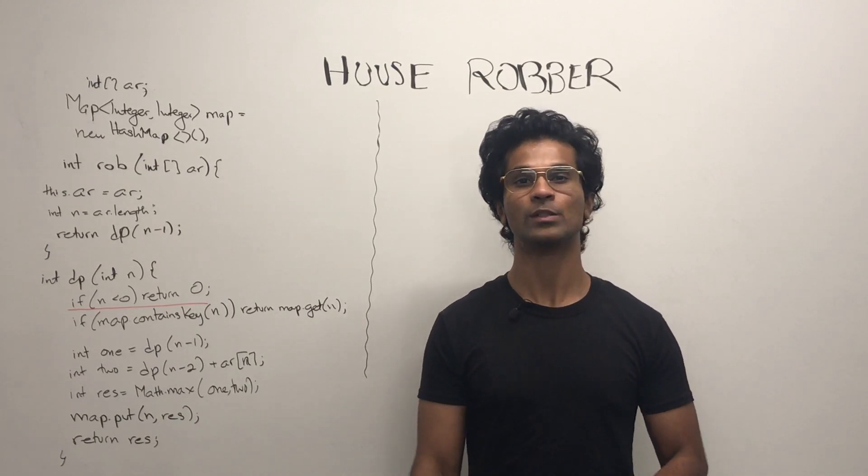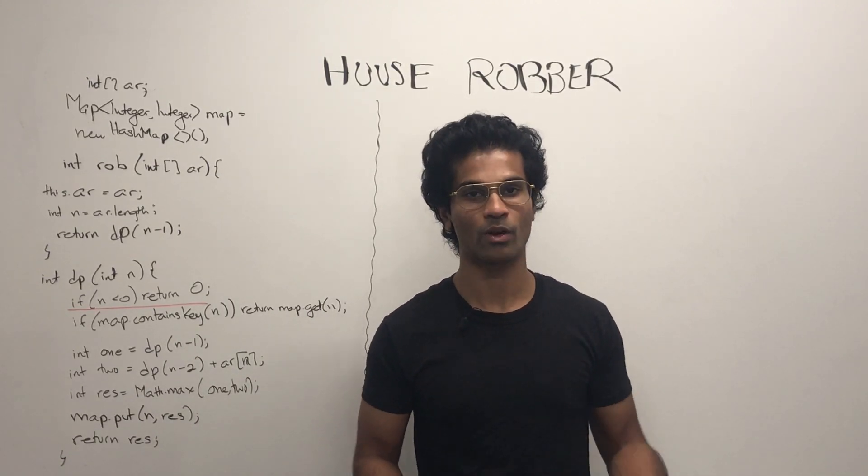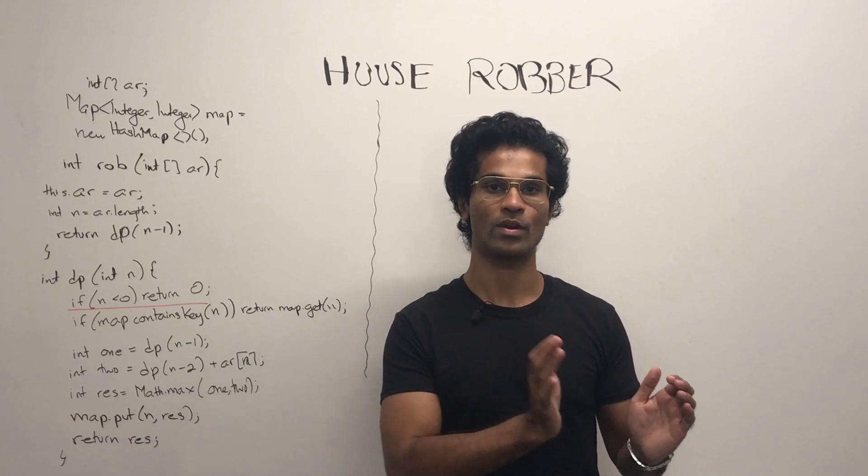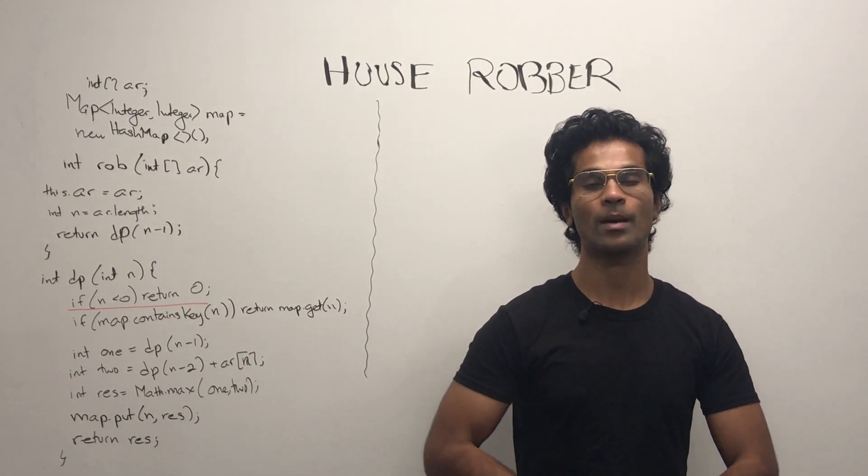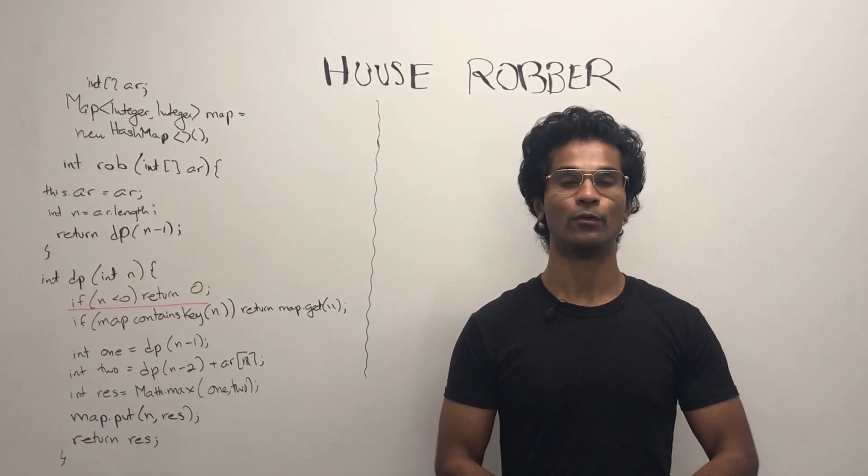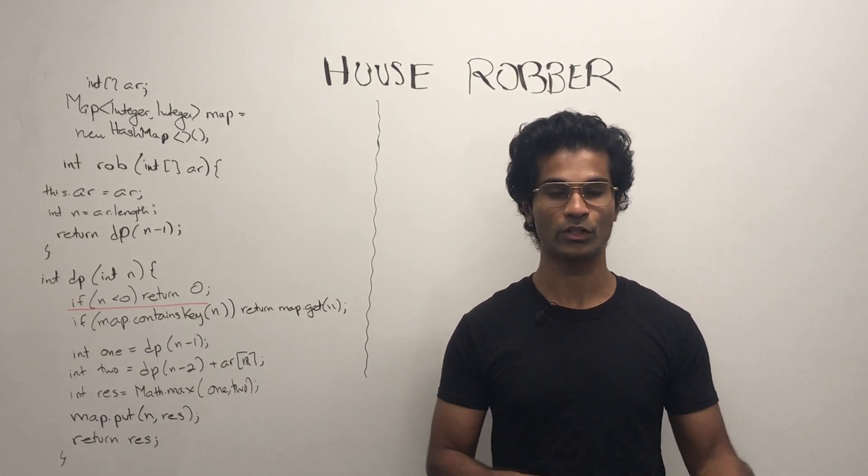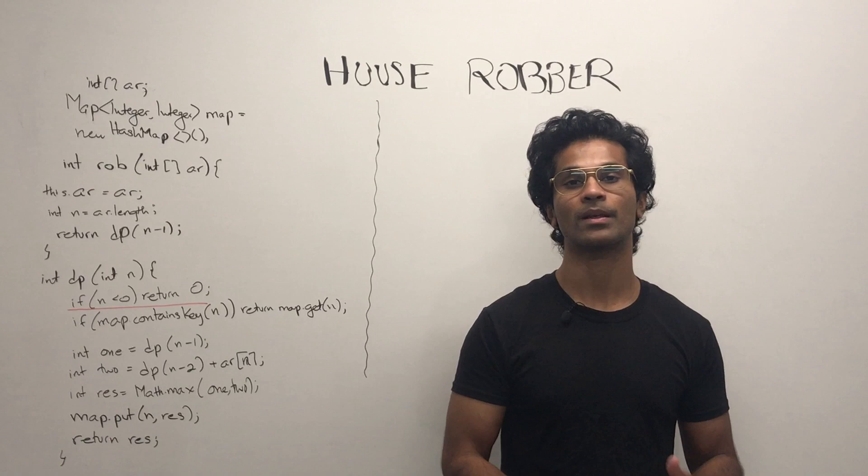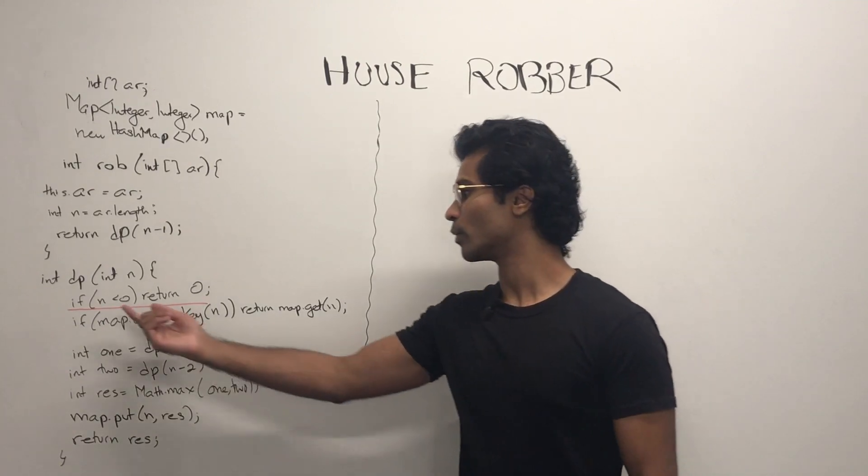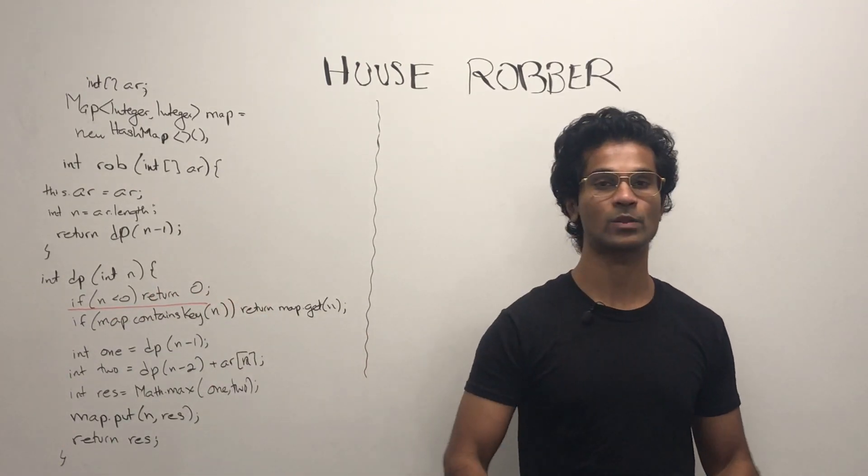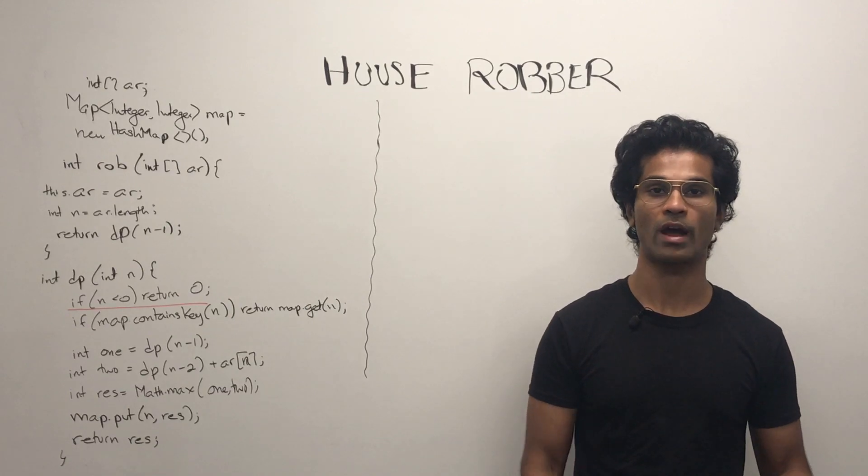Before we look at the code, let's briefly talk about base cases. Eventually we're going to run out of numbers when we keep making the array we're looking at smaller. So what happens when we go negative? If we only have one integer, that's fine. The index is going to be zero and we just return what's in that number. But if we go negative, we're going to return zero. And that's going to be our return condition for our recursive call.